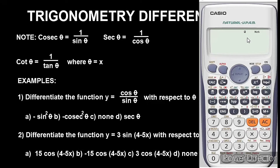Next we store a value in x, which we will use to differentiate the function. You can store numbers like 2, 3, or 4. I advise always working with 2 — I've worked with 2 for a long time and found no errors. To store 2: press 2, then press Shift, then the Store button, then Alpha and x. It will confirm that 2 has been stored as x.